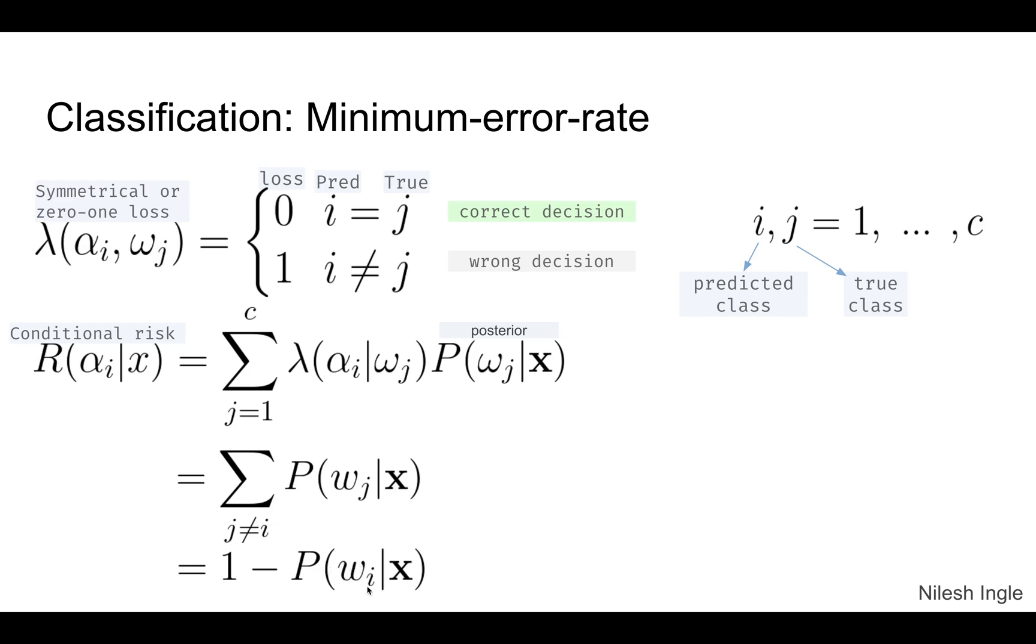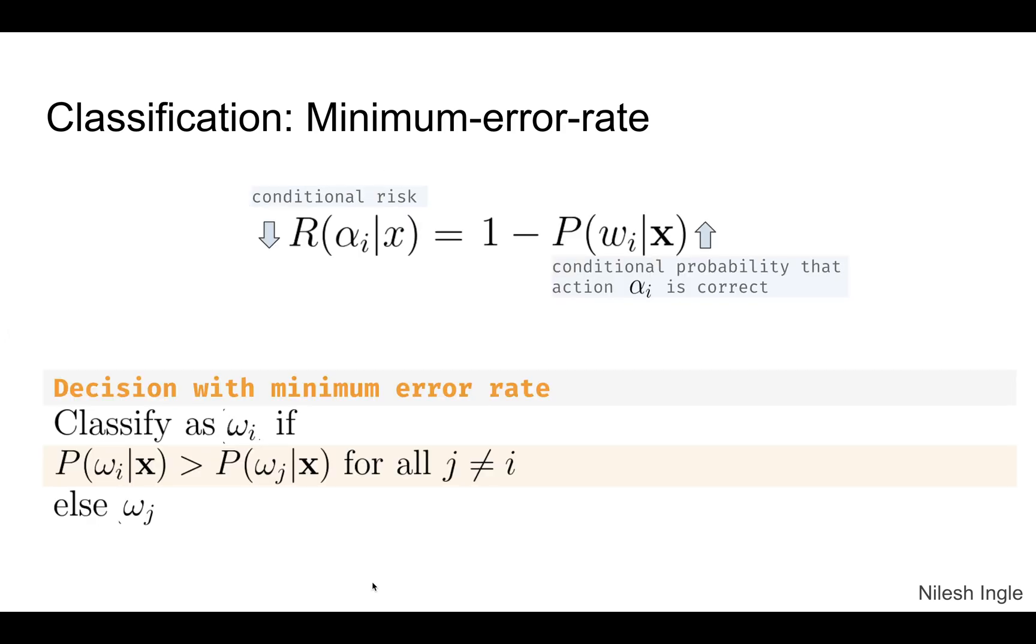Now if we use that relation, when we look at this, to minimize the conditional risk what we want to do is maximize the posterior probability so the negative value will increase and so the conditional risk will decrease.